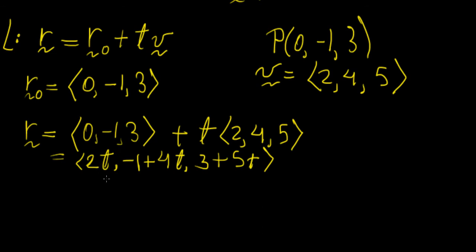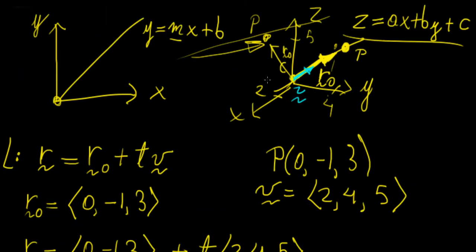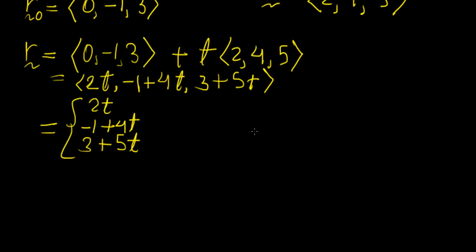If we put some constant t in here — like 1 or 2 — we can calculate the coordinates of the point it represents on that line. We can express this in terms of components: the x component is 2t, the y component is -1 + 4t, and the z component is 3 + 5t. That's how you represent the equation of a line in three dimensions. We need this parametrization because otherwise we can't represent the line in three dimensions, due to the issues we already pointed out.